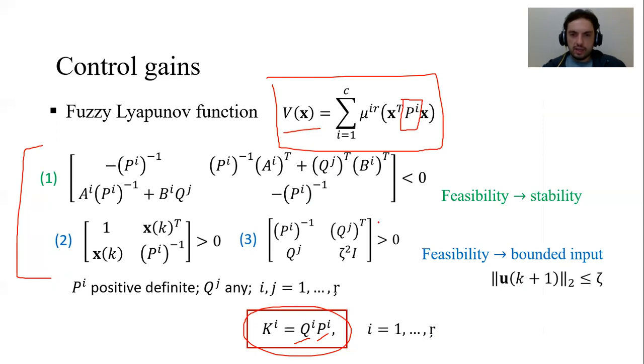For that to happen, this LMI must be true. It means that we have to solve a linear programming problem and find a solution for P and K to make this true. And if this is true, we have the Lyapunov stability of the closed loop.